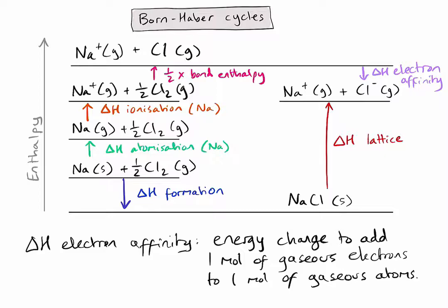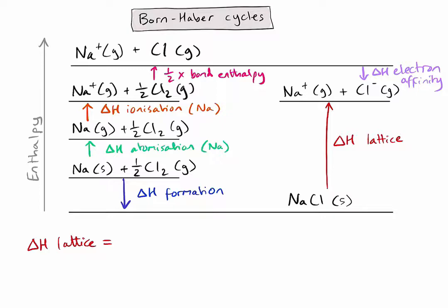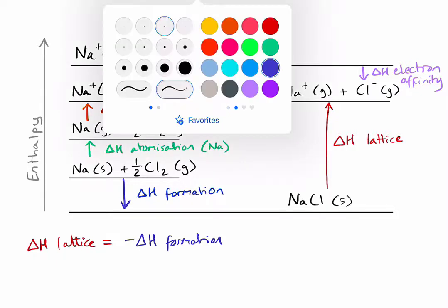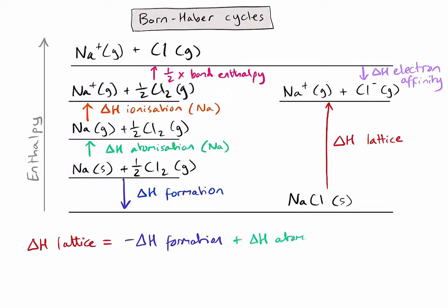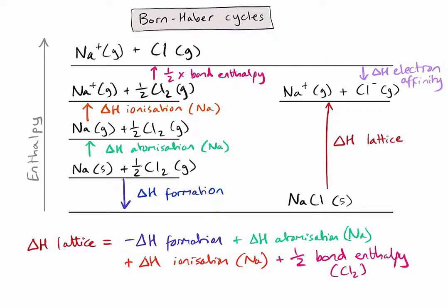The final calculation is as follows: starting at the bottom line where sodium chloride is in a solid state, I need to go backwards up that first blue arrow, so I'm going to use the negative value — meaning I change the sign on the enthalpy change of formation. I then add the enthalpy change of atomization, then the enthalpy change of ionization, then half the bond enthalpy for a chlorine molecule, and then the electron affinity value — which will probably be a negative number. Following that process, I've now calculated the lattice enthalpy for sodium chloride.